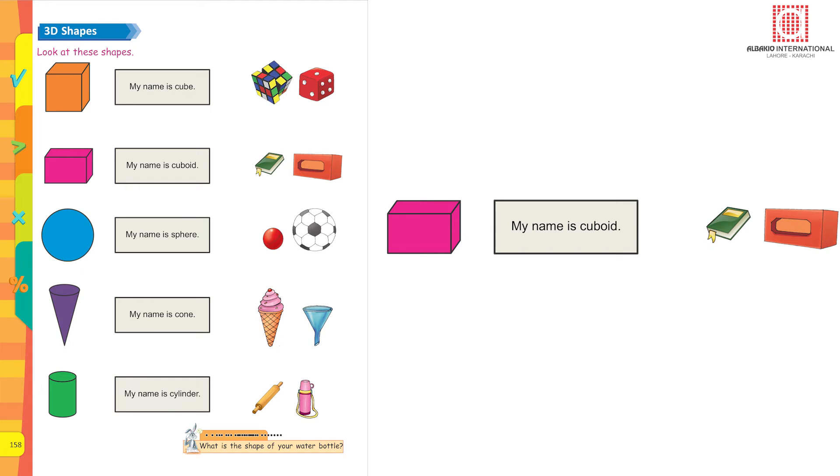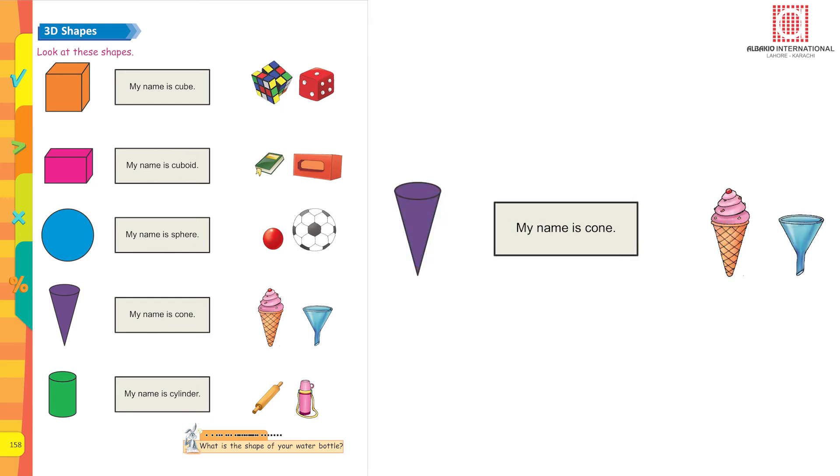Now you exactly know the difference between a cube and a cuboid. Examples are a tissue box and a book. My name is sphere, yes, a football, a cricket ball. This is a cone, and the things which you come across in your daily life are cone ice cream, your funnel.